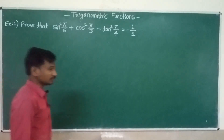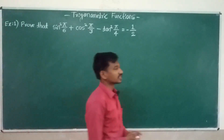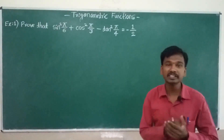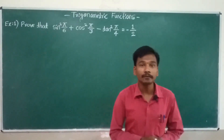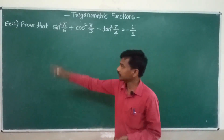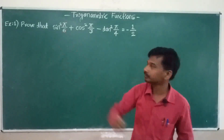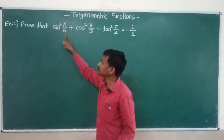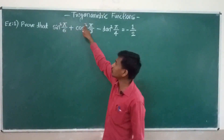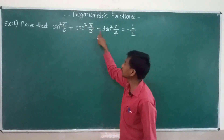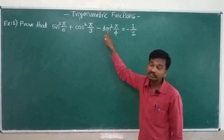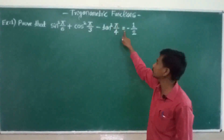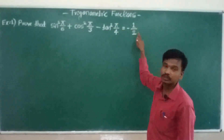Let us discuss some examples on trigonometric functions based on table values. Example number 1: prove that sin squared pi divided by 6, plus cos squared pi divided by 3, minus tan squared pi divided by 4, is equal to minus 1 divided by 2.